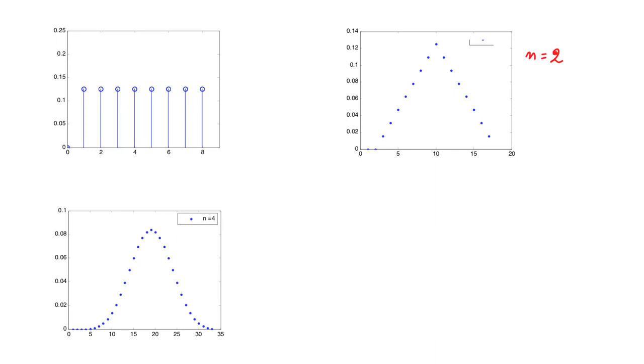Now we can keep doing this. If we add four of these discrete uniforms, of course assumed independent, then we obtain a PMF that starts to have a shape close to that of a normal shape.